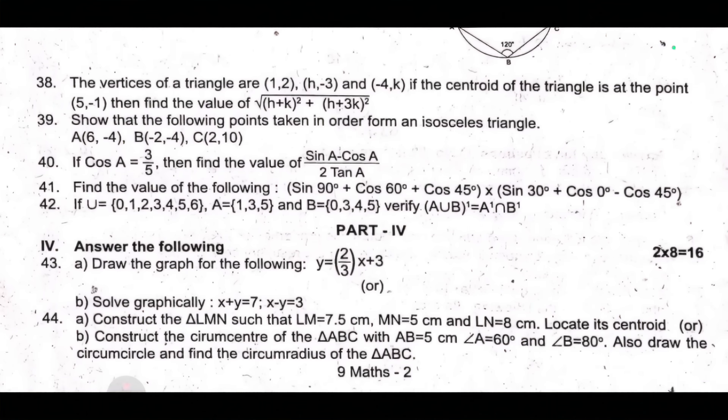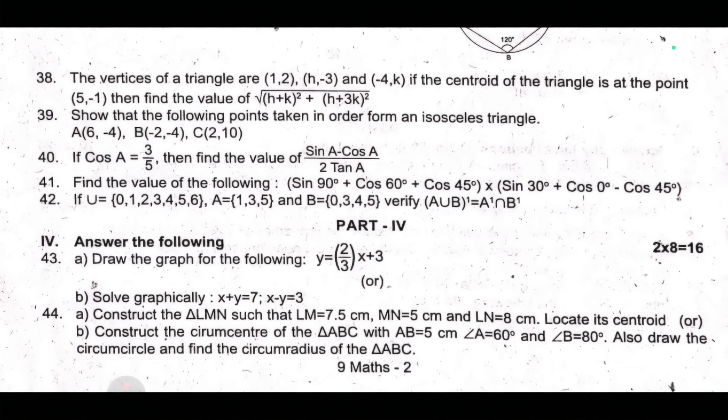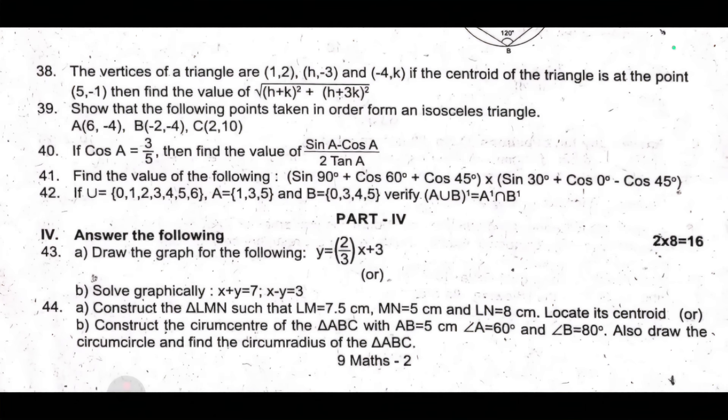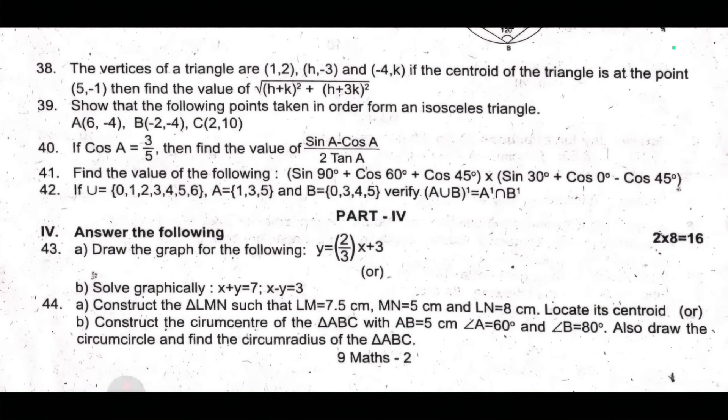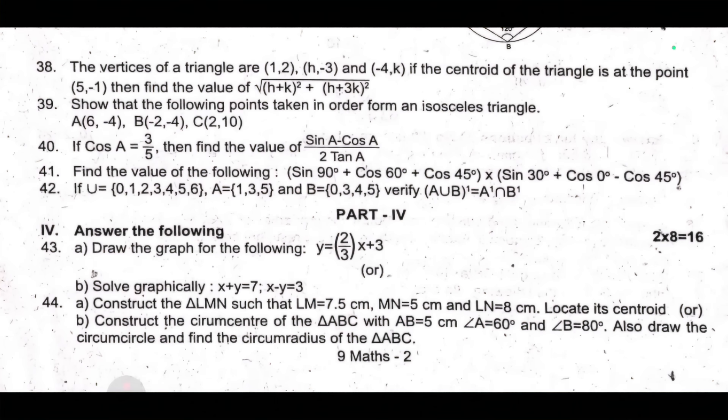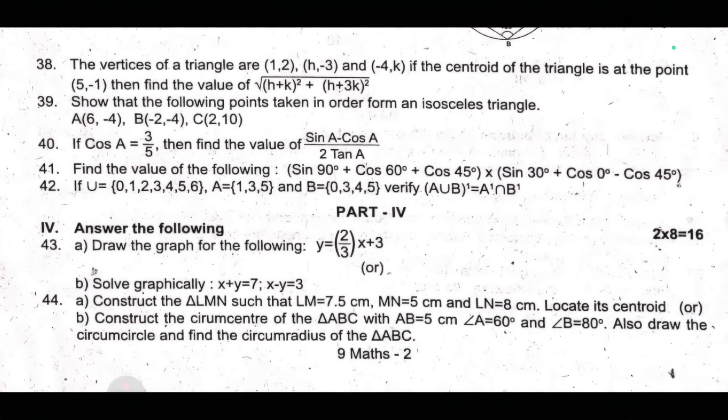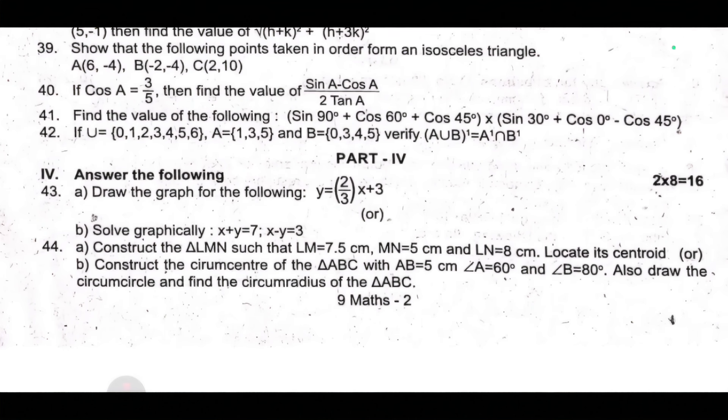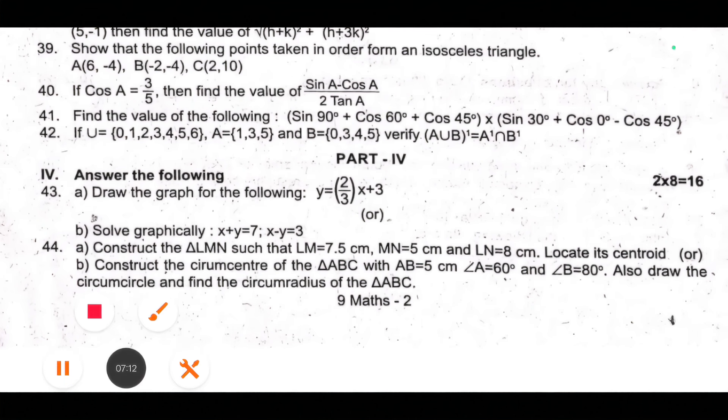Forty-second, if U equal to {0, 1, 2, 3, 4, 5, 6}, A equal to {1, 3, 5}, B equal to {0, 3, 4, 5}, verify (A union B)' equal to A' intersection B'. Part 4: a) Draw the graph for the following: y equal to 2/3 x plus 3. b) x plus y equal to 7, x minus y equal to 3.